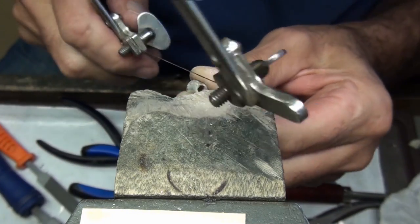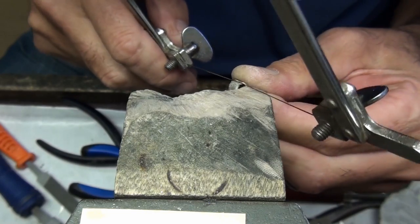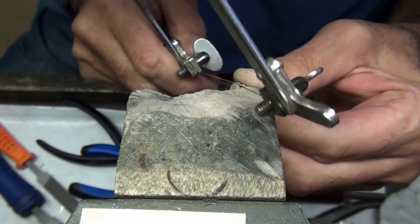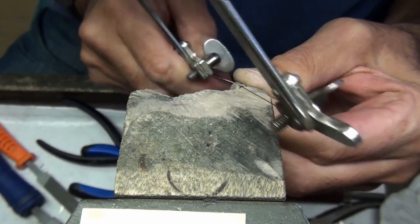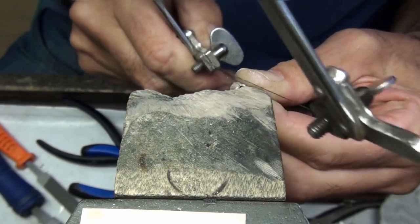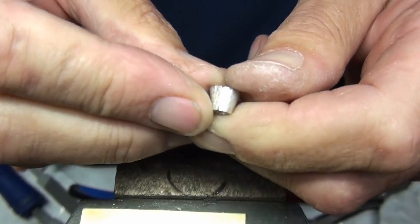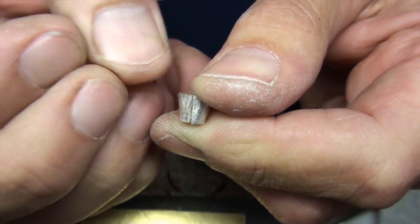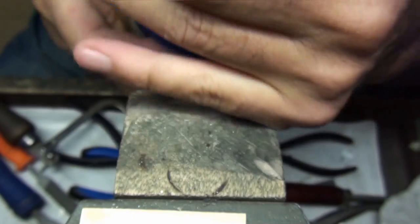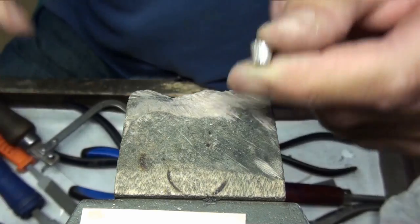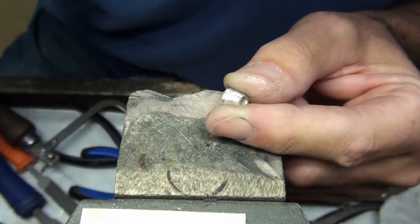Now I'm just going to run through once with my saw blade. That cleans the joint and makes it perfect, so when it comes together there'll be no gap. Now I'm going to flux that and I'm going to show you how to close that gap up.